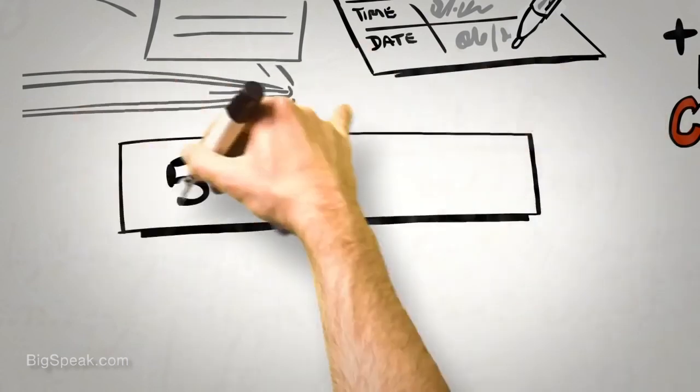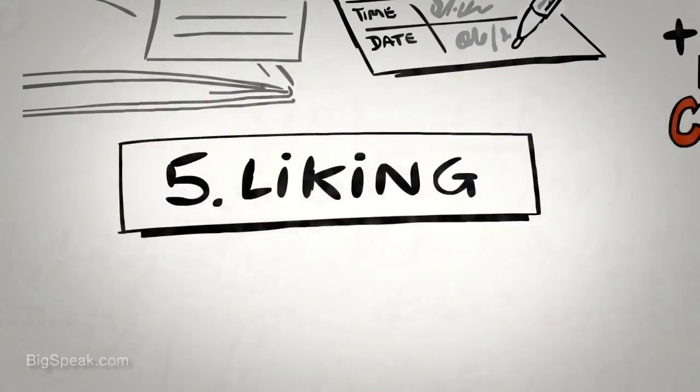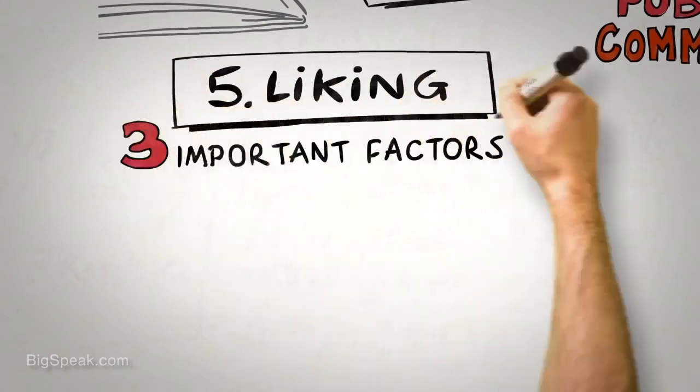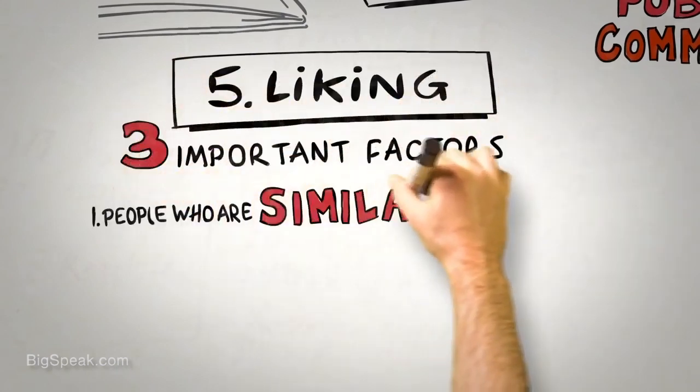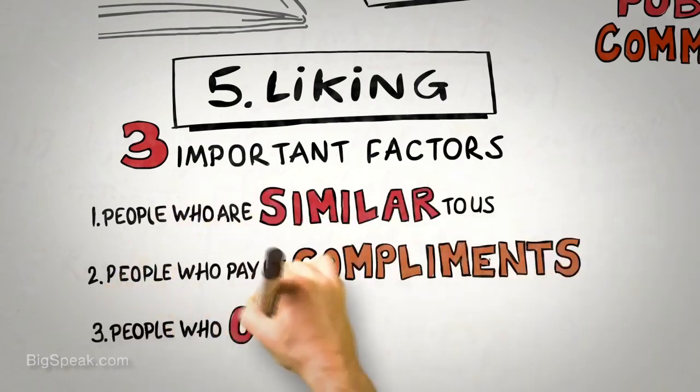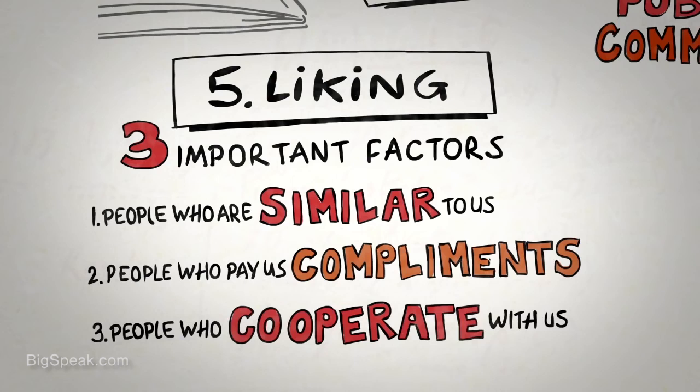The fifth principle is the principle of liking. People prefer to say yes to those that they like. But what causes one person to like another? Persuasion science tells us that there are three important factors. We like people who are similar to us. We like people who pay us compliments. And we like people who cooperate with us towards mutual goals.